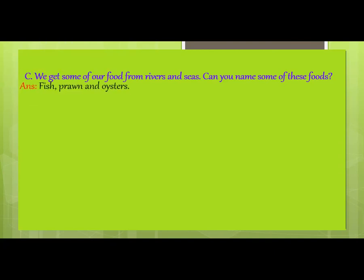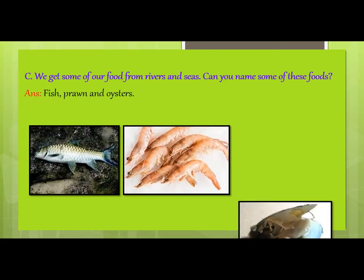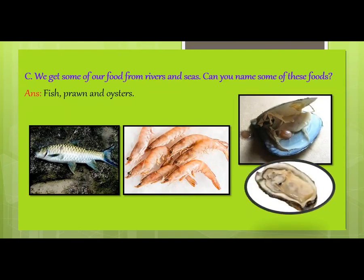Part C: we get some of our food from rivers and seas. Can you name some of these foods? Seafood we can eat includes fish, prawn, and oysters. Prawn means chhing — it's a small sea animal with ten legs. Prawns are grey when raw and turn pink when cooked. An oyster is a large flat shellfish, and interestingly, you can find a pearl inside an oyster.